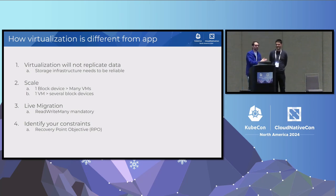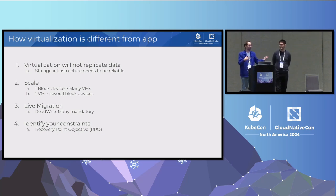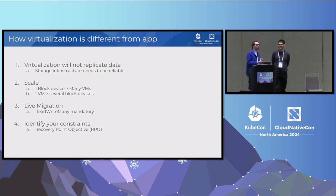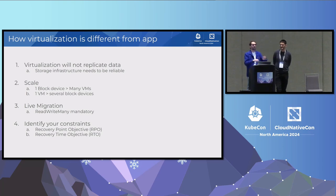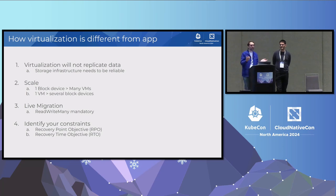RPO is Recovery Point Objective — the amount of data you can afford to lose. In my telemetry example, I could afford to lose five minutes of data. RPO zero means no data loss at all. RTO is Recovery Time Objective — how long you can afford to not serve your service. For example, during a Postgres failover, you can have RPO zero but still have an outage of several seconds while rerouting the connection.